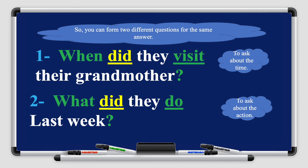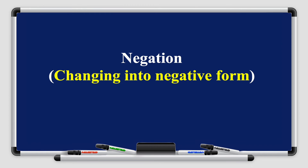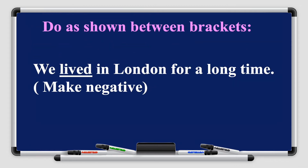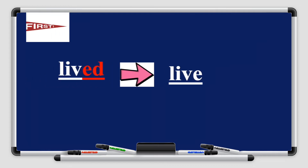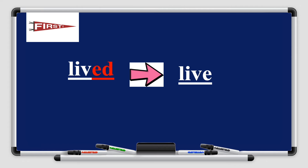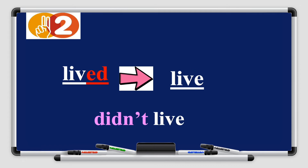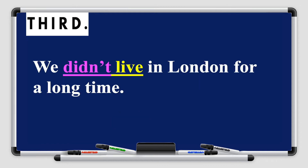We've revised how to make affirmative sentences in the past simple tense and how to form questions. Now we're going to revise negation — changing sentences into negative form. First, look at the verb 'lived' and change it to its root form: 'live.' Then add 'didn't' before the verb. So: 'We did not live in London for a long time.'